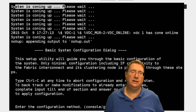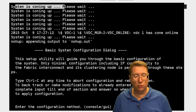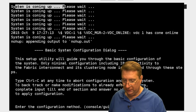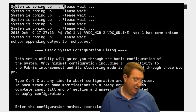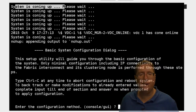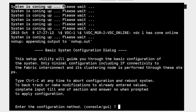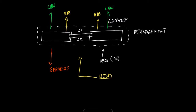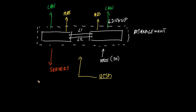Now the other thing I want to highlight here is what I'm going to refer to as our order of operations. When it comes to order of operations, I want to focus on what it is we're going to be configuring and how we're going to implement the configuration, and the best place to do that is going to be on our blackboard. What I'm doing is I'm going to be configuring what we could best refer to as a UCS cluster.